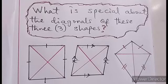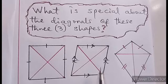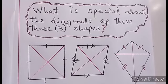I want you to view these three shapes properly and tell me what is special about the diagonals of these three shapes. The square, the rhombus and the kite. What is special about their diagonals?